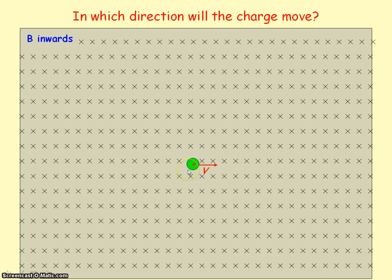Here we have a positively charged particle moving to the right, perpendicular to the magnetic flux density which is directed into the plane of the screen. To find the direction of the magnetic force, we apply Fleming's left hand rule. The second finger represents conventional current — the direction a positive charge is moving — so we point it to the right. The first finger represents magnetic flux density, pointing into the plane of the screen.